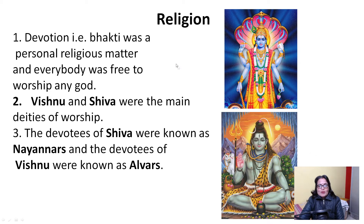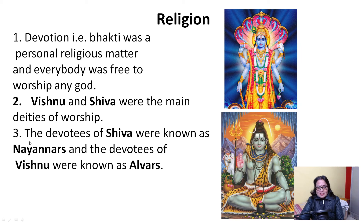About religion: devotion, or Bhakti, was a personal religious matter and everyone was free to worship any deity. The two main deities were Vishnu and Shiva. The devotees of Shiva were called Nayanars, and the devotees of Vishnu were called Alvars. You can remember it easily: Shiva has three 'nayan' (eyes), so Nayanars. This is also a question in your exercise: explain the religious beliefs of the Pallavas.